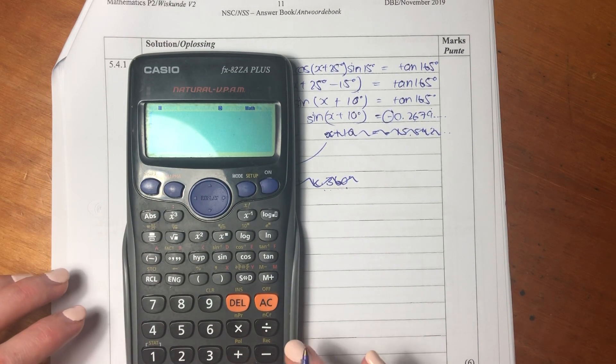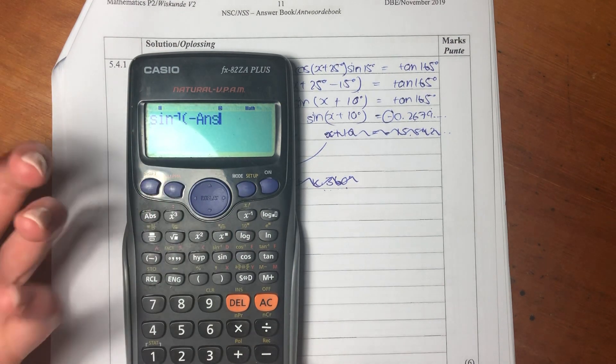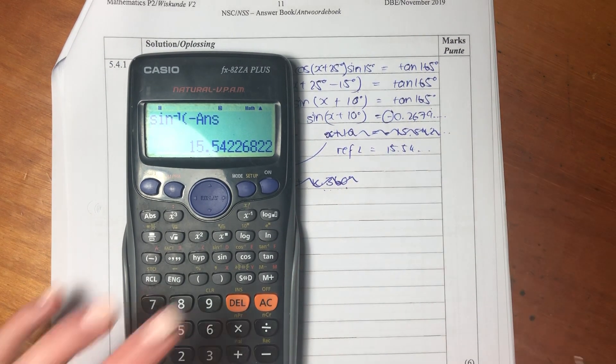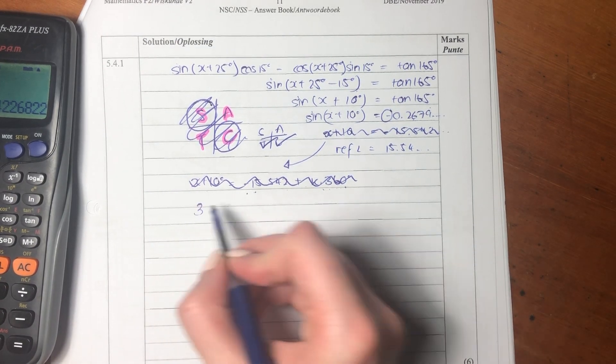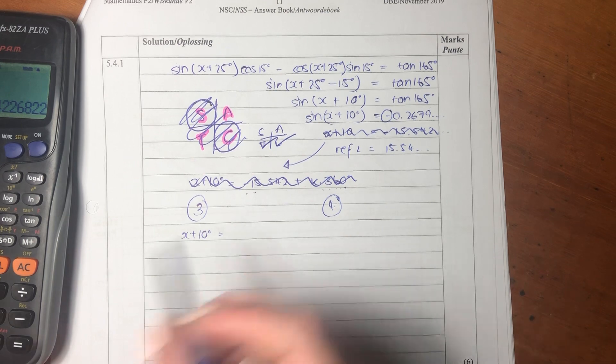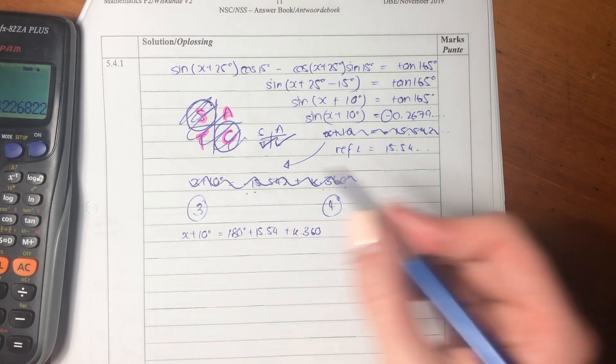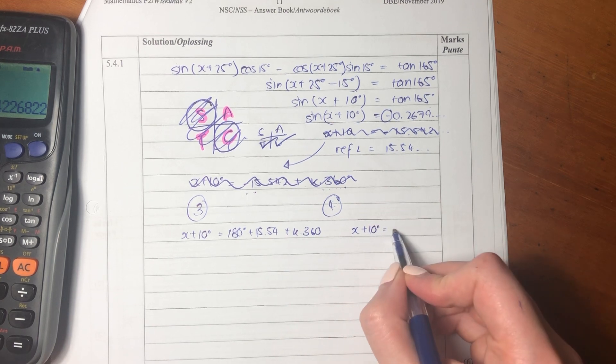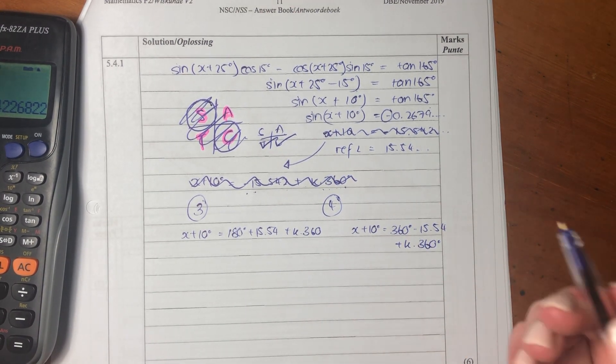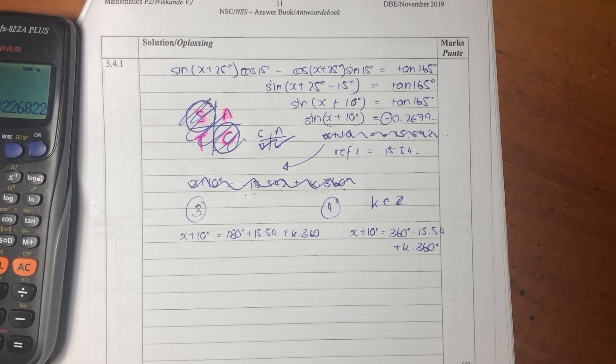So all we do is we say sine, the inverse version of sine, and then I'm going to say the negative of the answer because the answer was negative. So we just want the positive version of that to get our reference angle. So our reference angle is 15.54. So now we know that we're going to be in quadrant three and quadrant four. Remember here that k is an element of real numbers. It's always important to put that in.